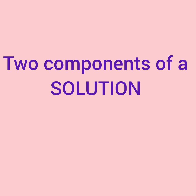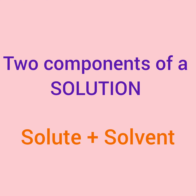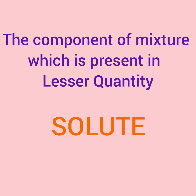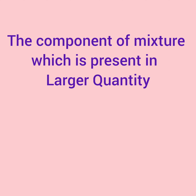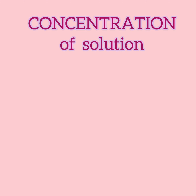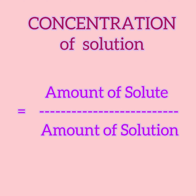A solution is made up of two components: solute and solvent. The component of a mixture which is present in lesser quantity is called a solute, while the component present in larger quantity is called a solvent. For understanding the types of solution, we also need to understand another term — concentration of a solution, which is equal to the amount of solute divided by the amount of solution.